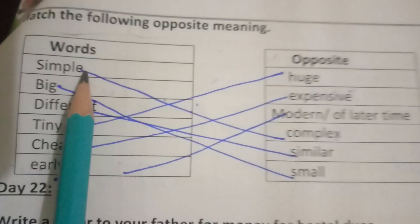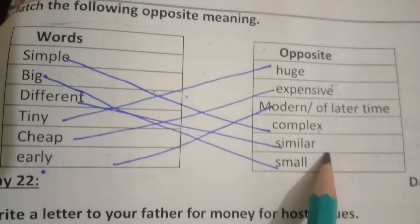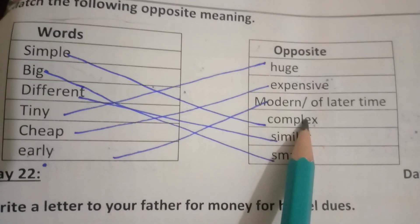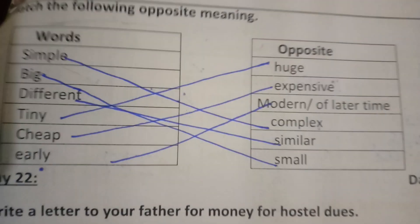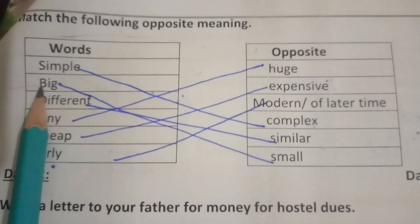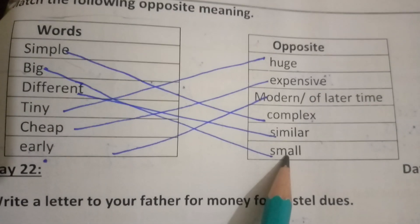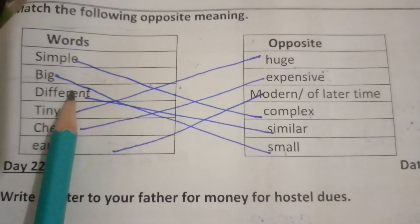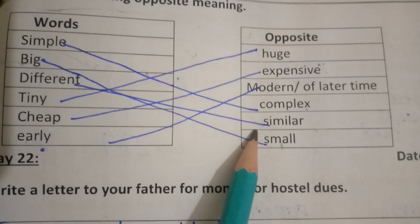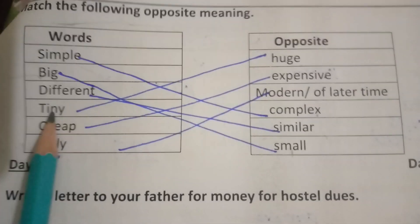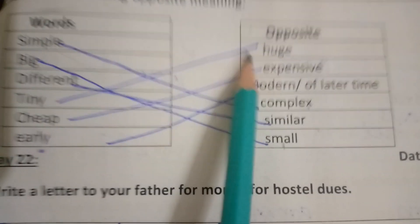Simple — complex. Big — small. Different — similar. Tiny — huge.